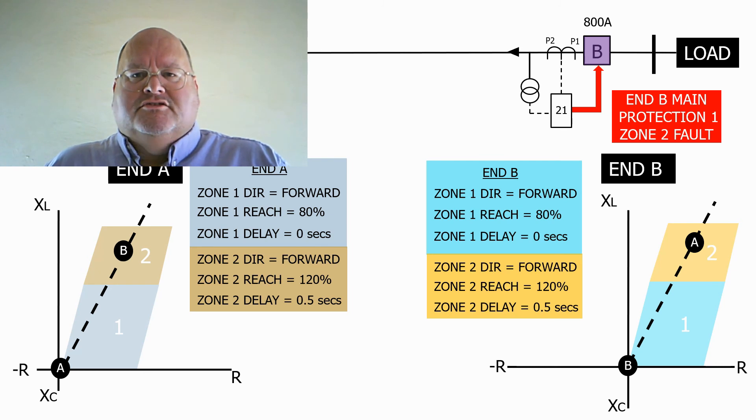The decision on whether or not to use this type of configuration depends on the required fault clearance time of the network. If a half a second delay is OK, then the scheme can be used. If the delay will start causing issues with network stability or other voltage issues, then a more complex scheme will be required, involving communication between the two feeder ends. This is covered in the next lecture.